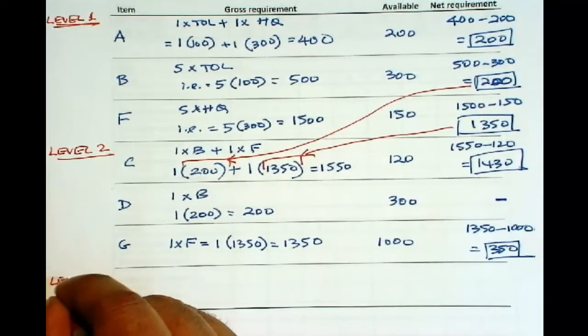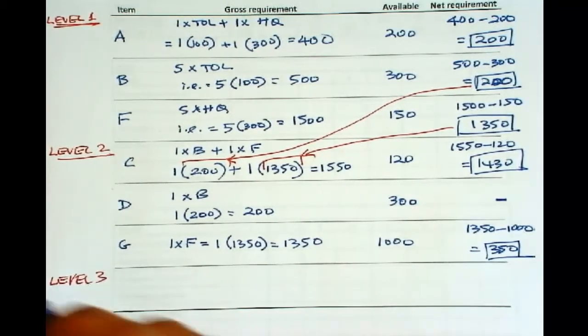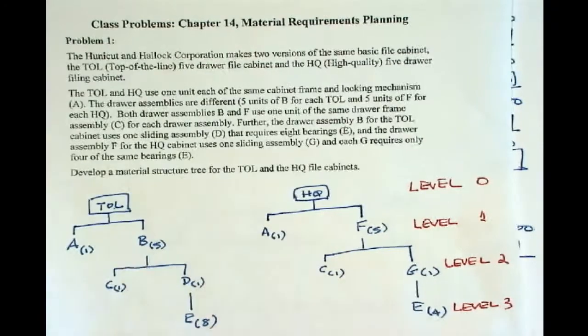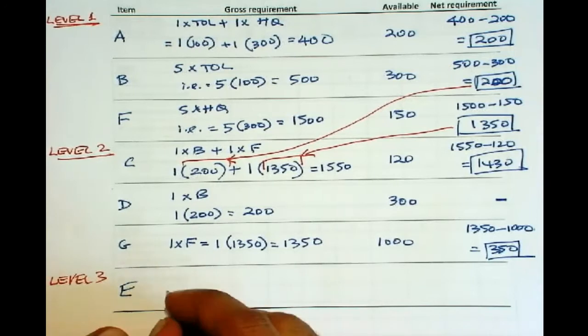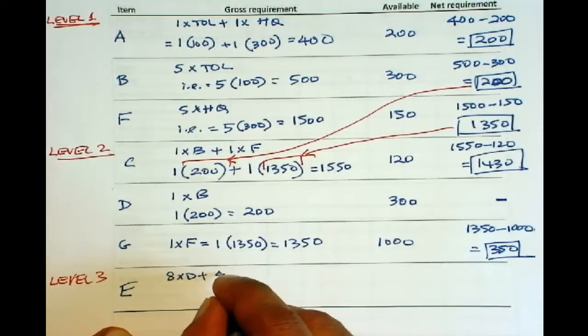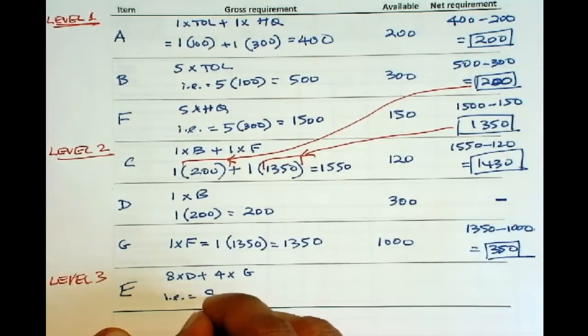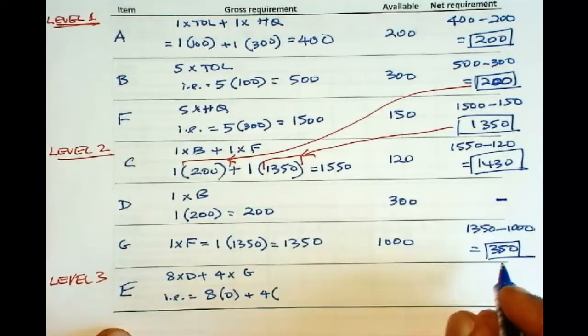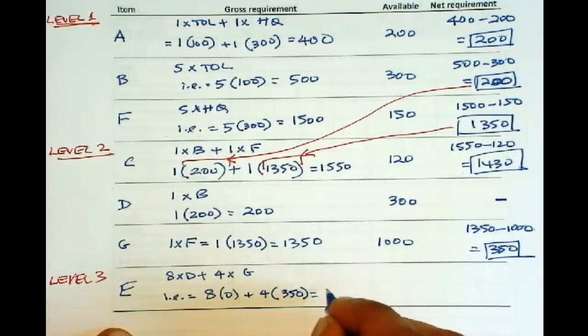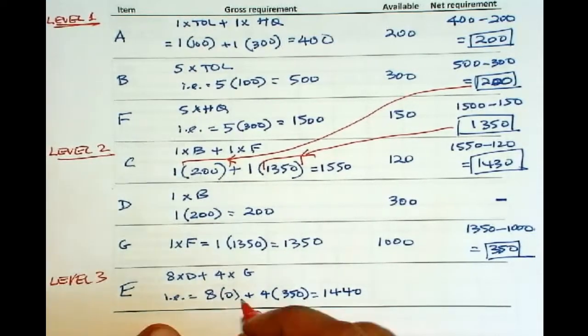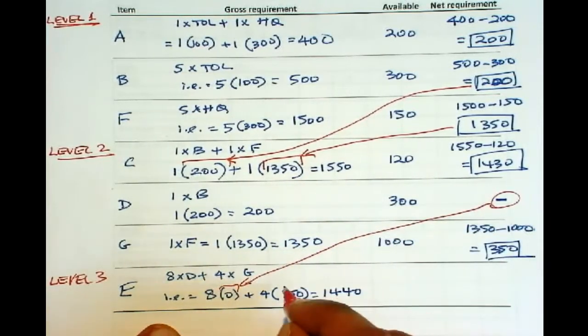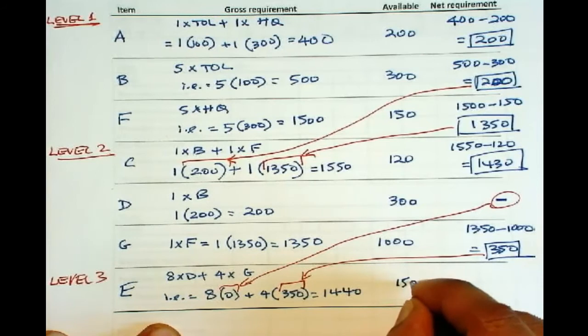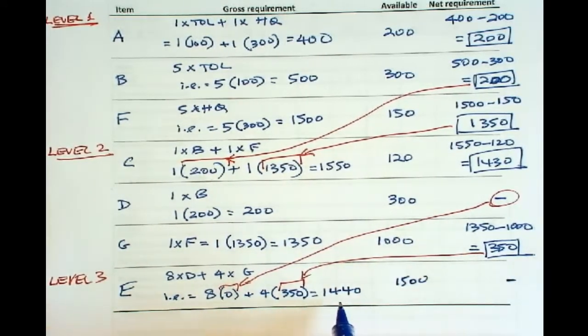Now let us go to level 3. And there is only one item, which is E. And we need 8 units of E for each D, and 4 units of E for each G. So that will be 8 times D plus 4 times G. And that is equal to 8 times D comes from here. So that is 0 plus 4 times 350 is 1440. Again, remember this 0 is from there. This is from here. And 1500 of E is available, and therefore no net requirement for E.